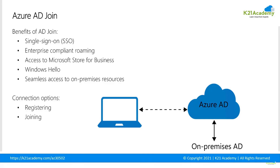Additional AD Join benefits include enterprise compliant roaming, which enables user settings across joined devices without needing a Microsoft account. There's access to the Microsoft Store for Business, where you can choose from an inventory of applications preselected by the organization. Support for Windows Hello provides authentication via PIN, facial recognition, etc. Restriction of access to applications from only compliant devices enforces conditional access policies. Finally, seamless access to on-premise resources is available when a device has line of sight to an on-premise domain controller, giving access to both cloud and on-premise applications.